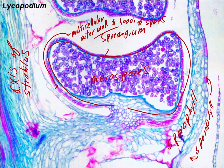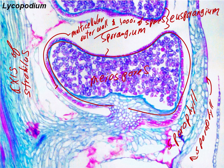That type of sporangium — with a multicellular wall and thousands of spores — is called a eusporangium, meaning a true or good sporangium. Almost everything we're going to see has eusporangia. One group is going to have a different kind of sporangium and we'll tell you about that when we get there.